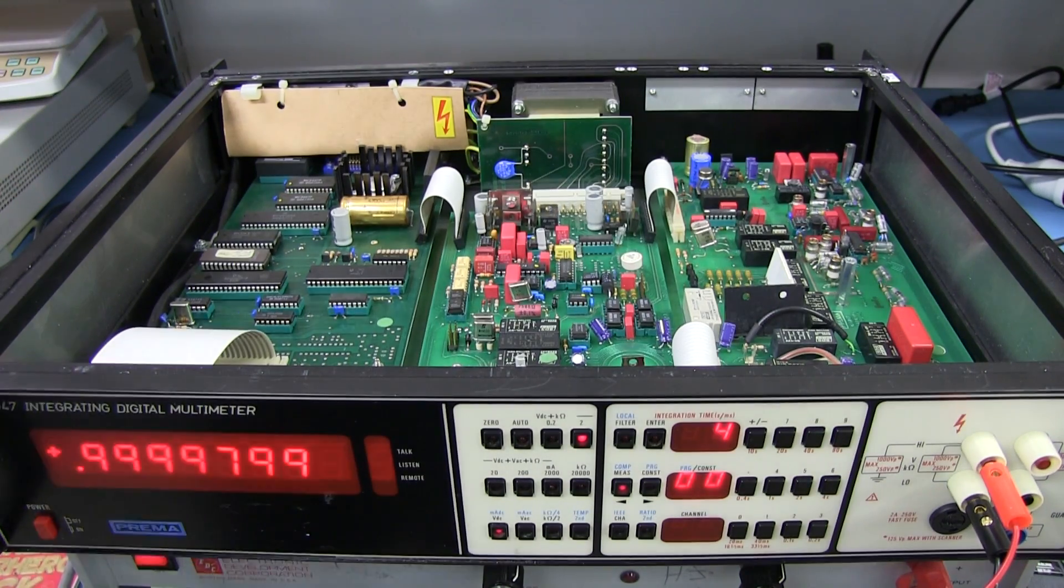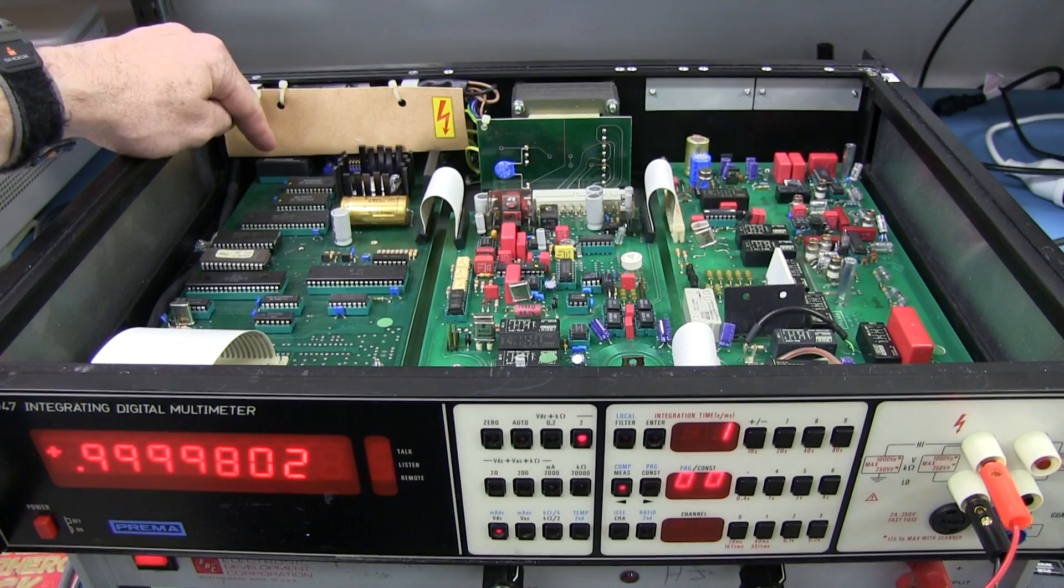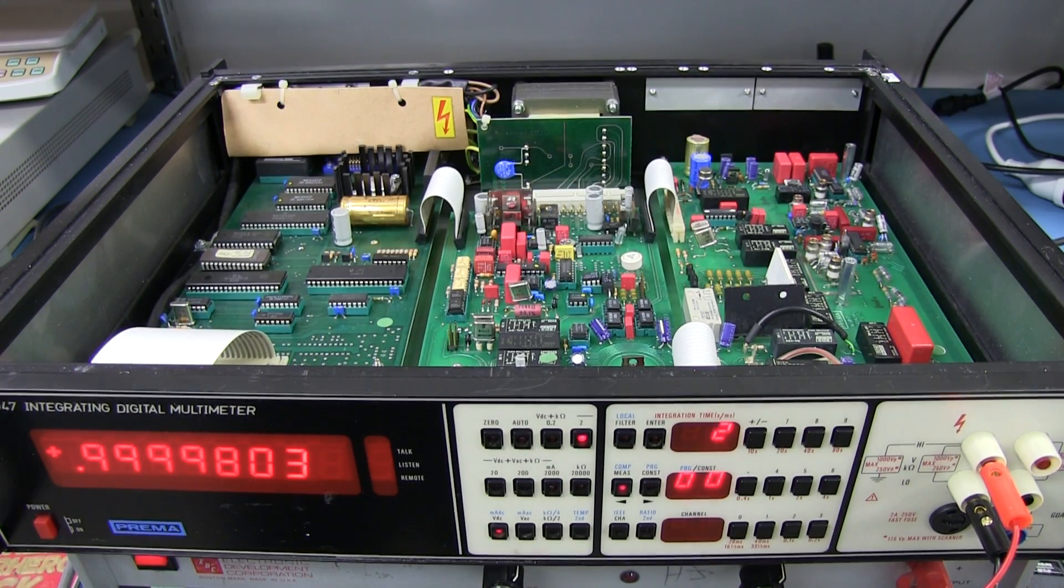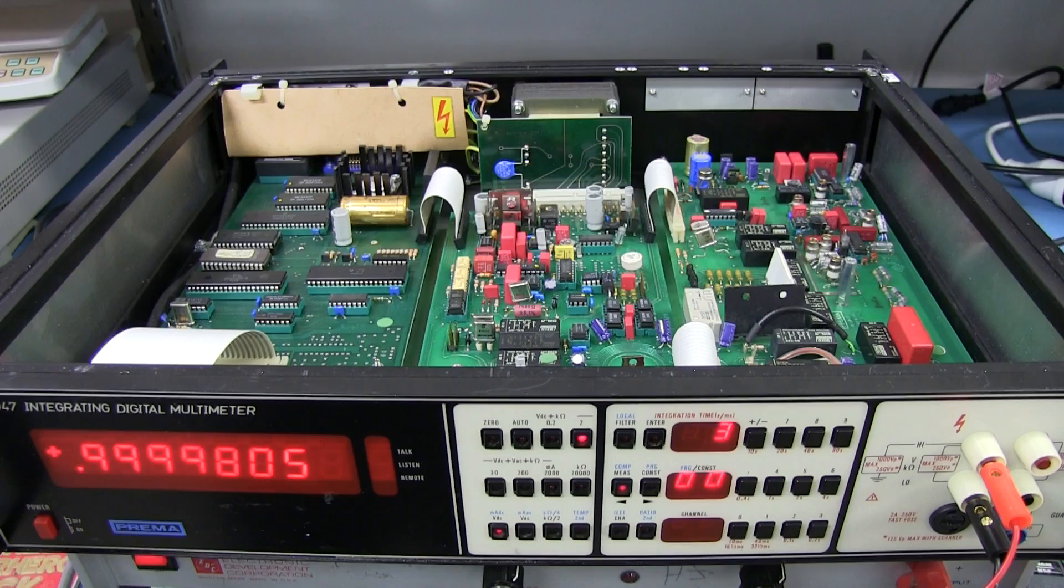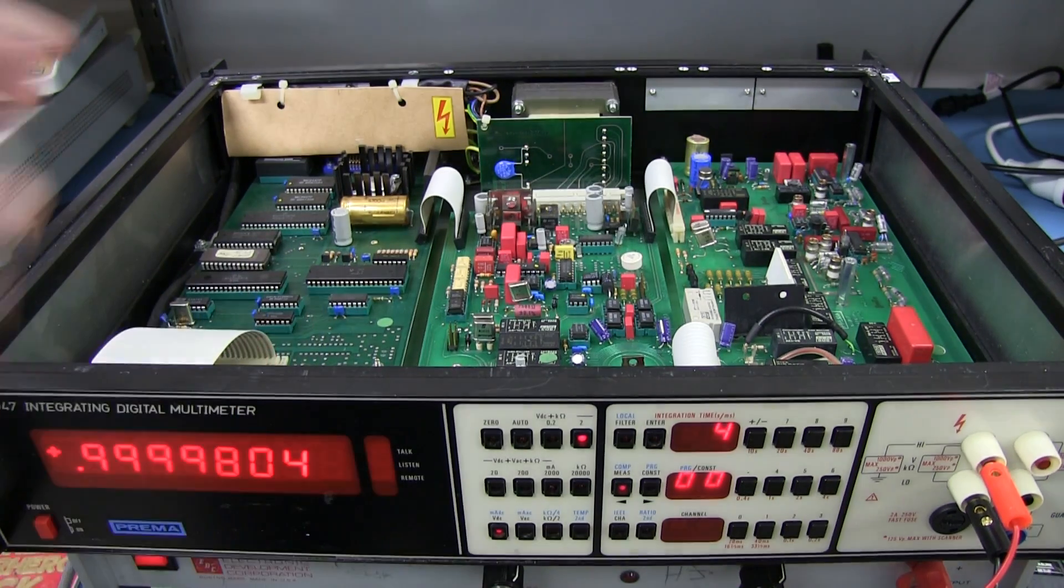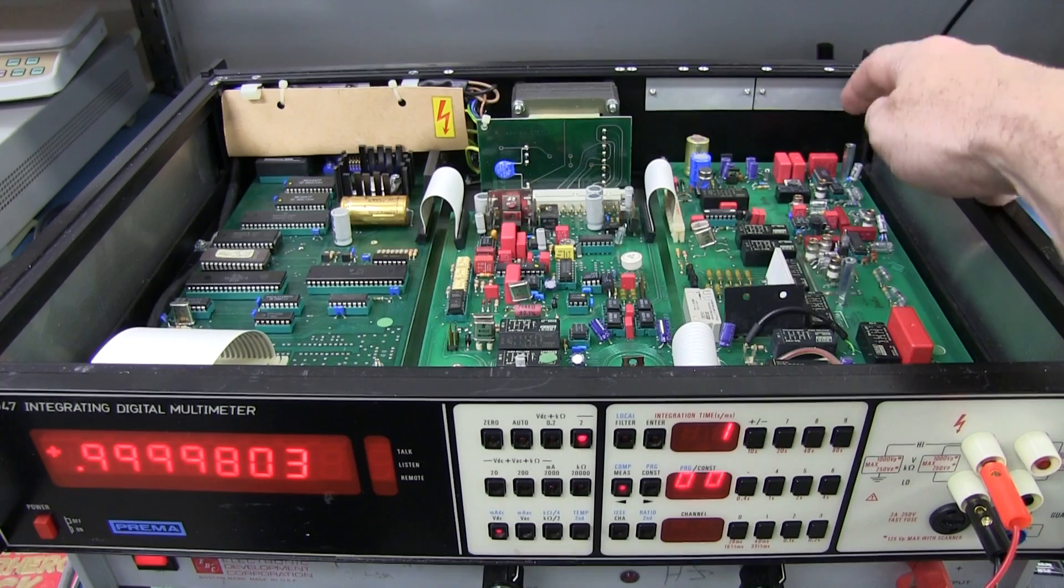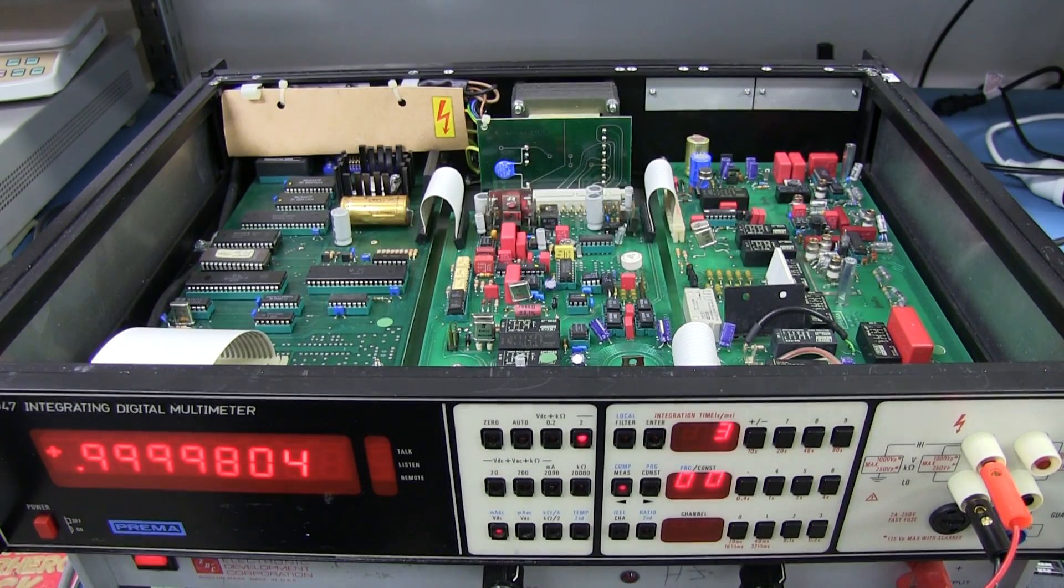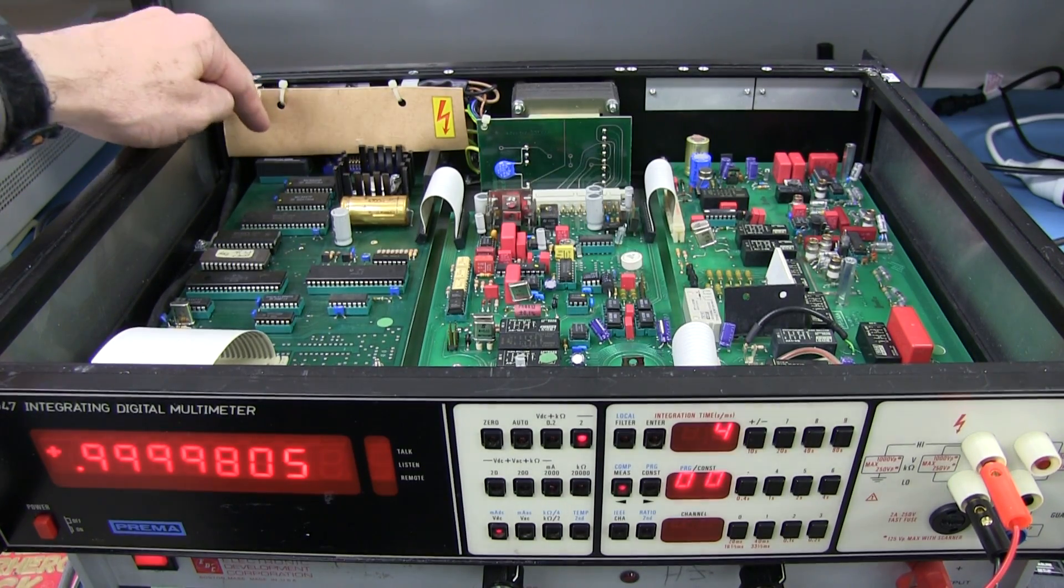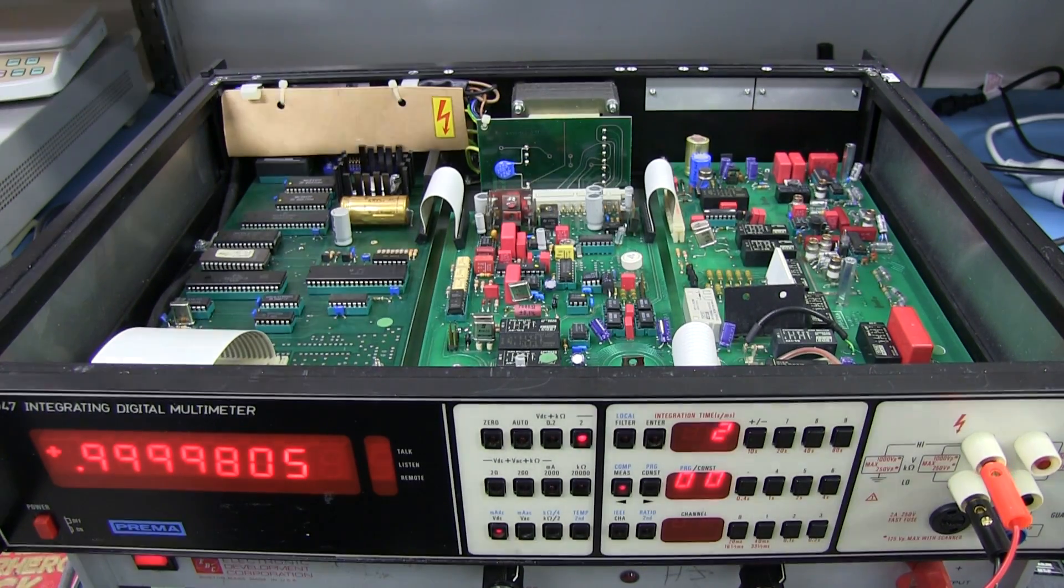In the previous video, I mentioned it seemed to be a little bit out and I suspected that might be due to the non-volatile RAM up the back here. If that's lost its memory contents, that has to be where the calibration constants are stored for this thing. These are electronic calibration constants. There's no calibration pots in here that you tweak or anything like that.